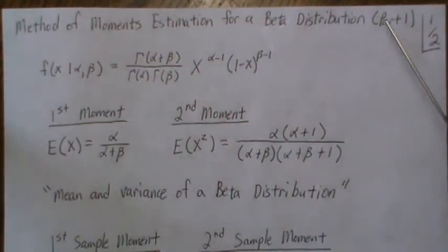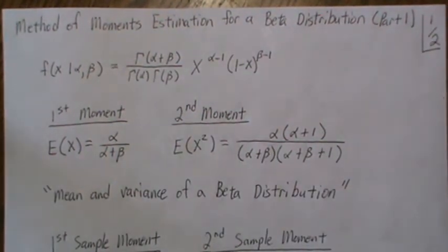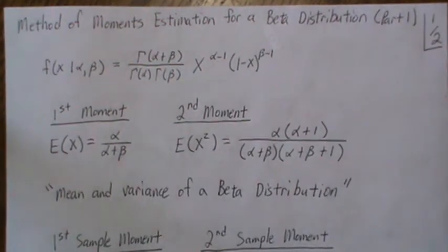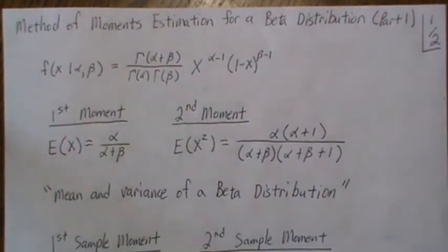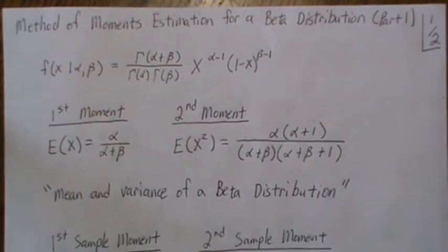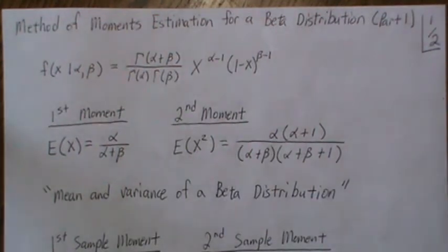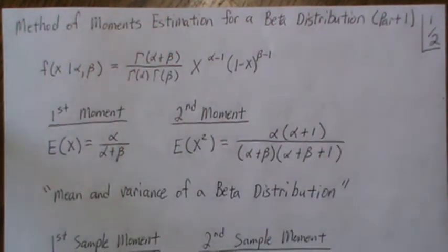I'm calling this part one because we're going to do an R program that takes these equations and copies them into R and then runs it to find the method of moments estimates for a beta distribution. But the program is so small that I'm going to combine it with the maximum likelihood estimation for the parameters of a beta distribution. So I'm going to have two videos, lecture videos, and then one R video combining the two.